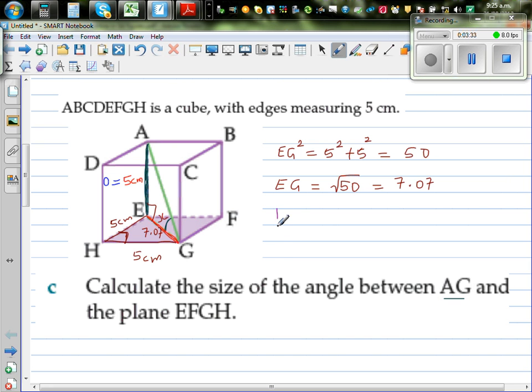So I'll draw this triangle out like this. This is A, E, G. I've taken this triangle out. So this is five centimeters and this is 7.07 centimeters. What is this side? This is your opposite, and this is your adjacent. And this is the angle that we want to find.